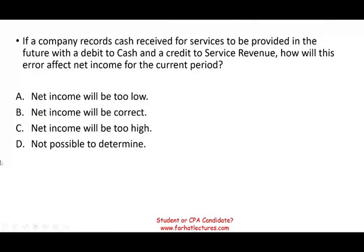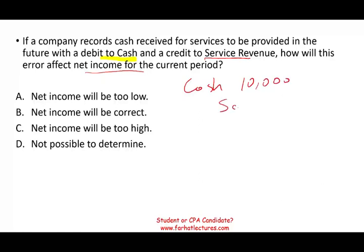Let's take a look at this question. If a company records cash received for services to be provided in the future with a debit to cash and a credit to service revenue, how will this error affect net income for the current period? You received cash for future services, so you debited cash and credited service revenue $10,000. The correct entry would have been debit cash, credit unearned service revenue. Therefore, you have more revenue recorded than you should, which means net income will be too high. The answer is C.